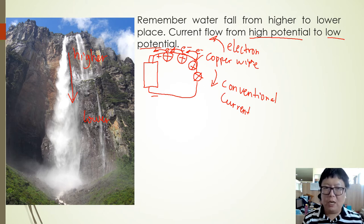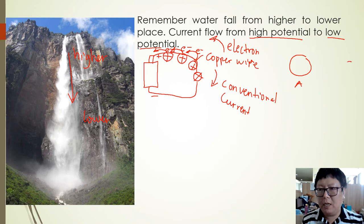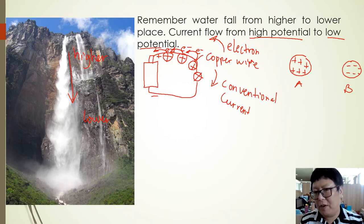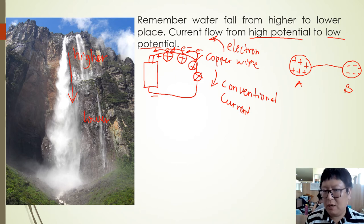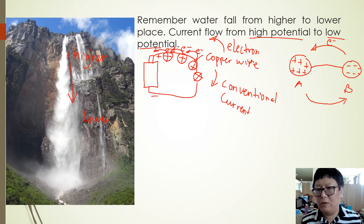High potential is the one that has positive charge, and low potential is the one that has negative charge. For example, if there are two objects A and B — A is a positively charged object and B is a negatively charged object — when we connect these two, the electrons will move from B to A, but the conventional current will move from A to B.